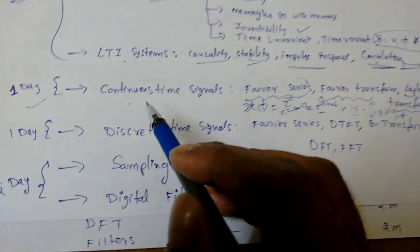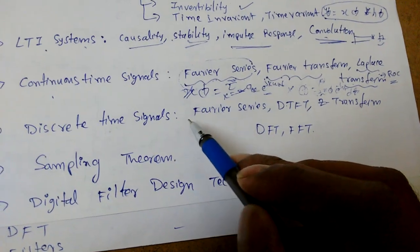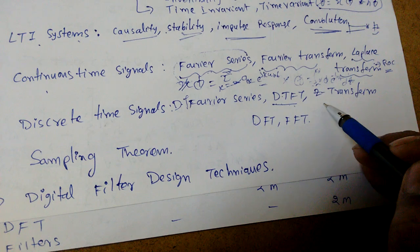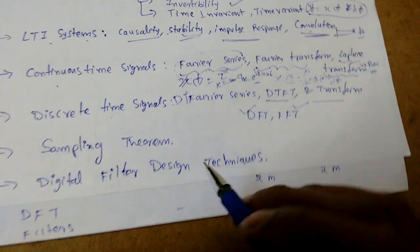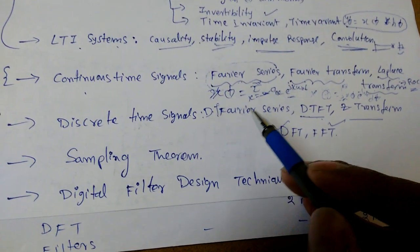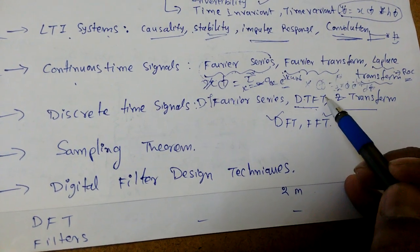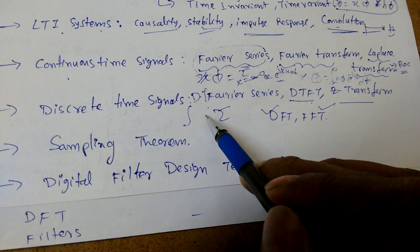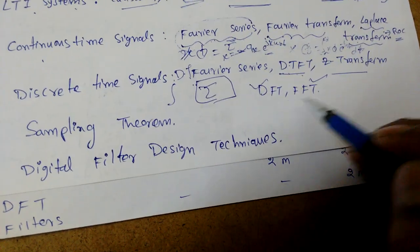For discrete-time signals there is the Discrete-Time Fourier Series, Discrete-Time Fourier Transform (DTFT), Z-transform, DFT, and FFT. This is also one day of study — since we already know the Fourier transform, the main difference is that we get summation instead of integration. It can be learned easily.